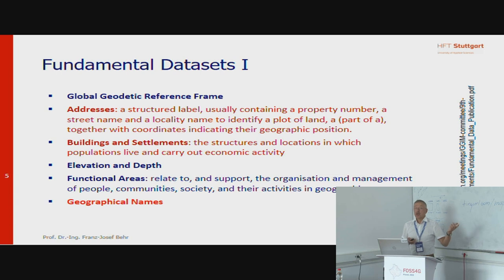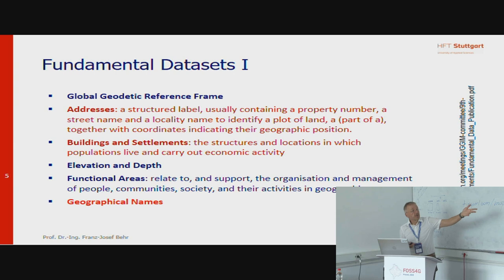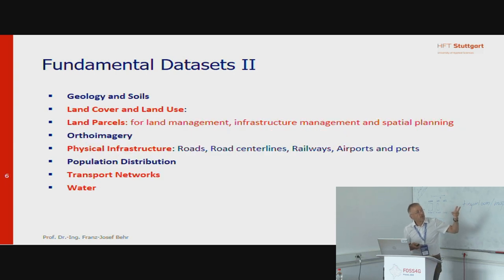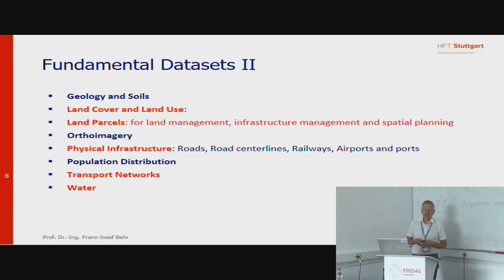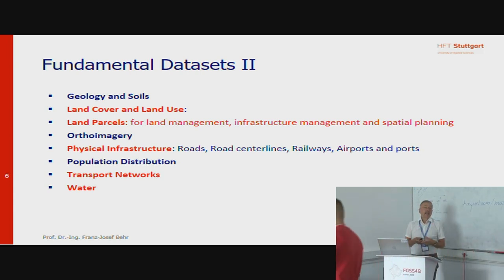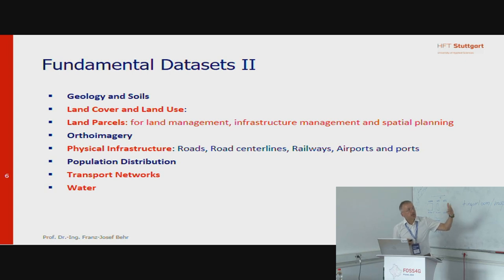What we see is, of course, addresses — we have those in maps and in cadastral data as well. We need information about buildings and settlements, and of course we need geographical names as we have seen before. OpenStreetMap data can also contribute to information about land cover and land use, and to a certain extent about land parcels, at least in some parts of the earth.